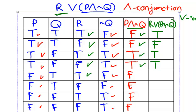We keep comparing R or P and not Q. Here we have two false, so this is false. We compare these two, this is true. And these last two, both are false, so we have false.